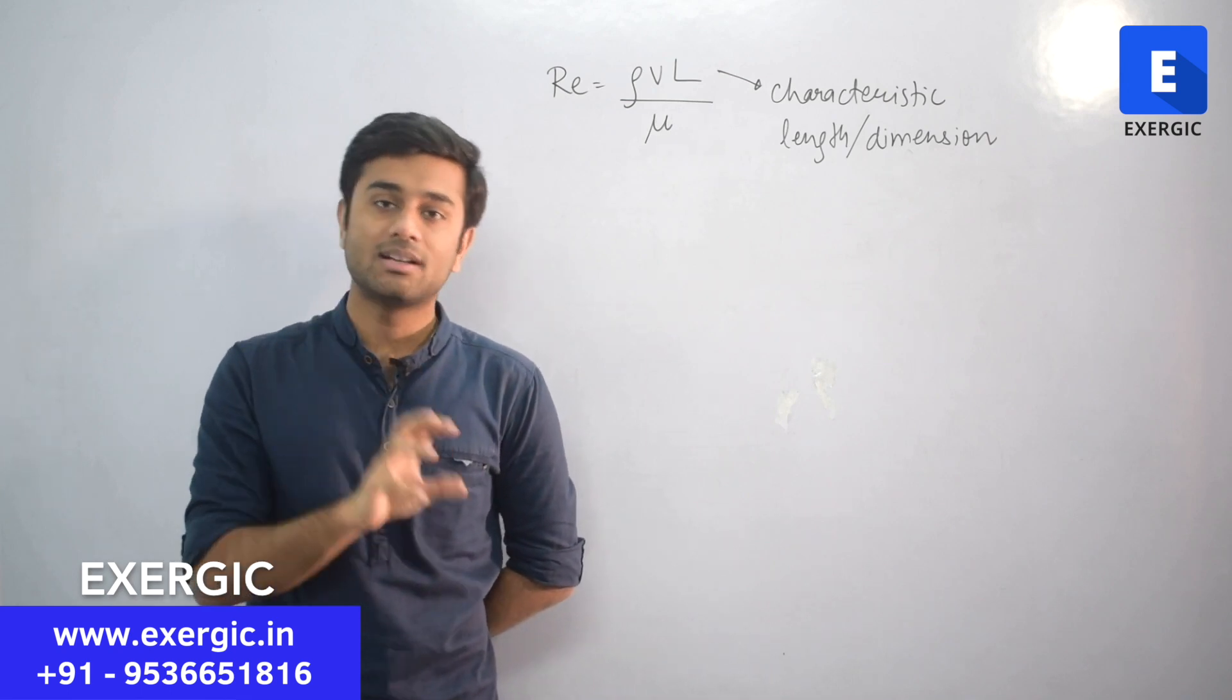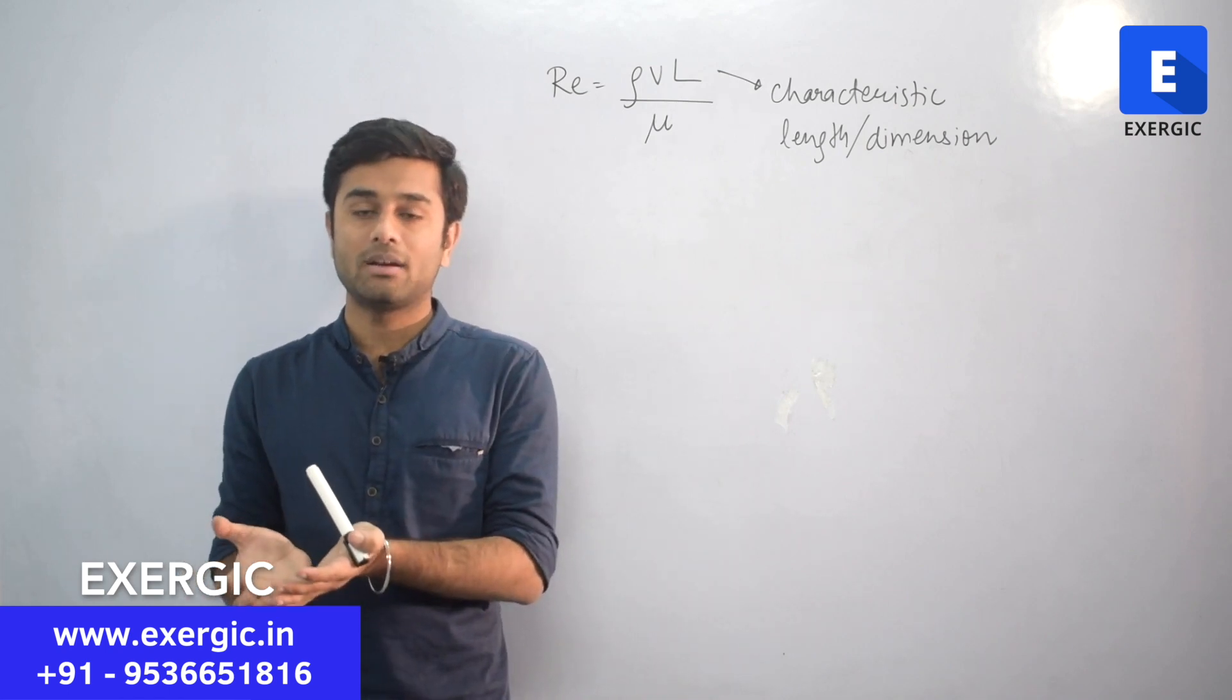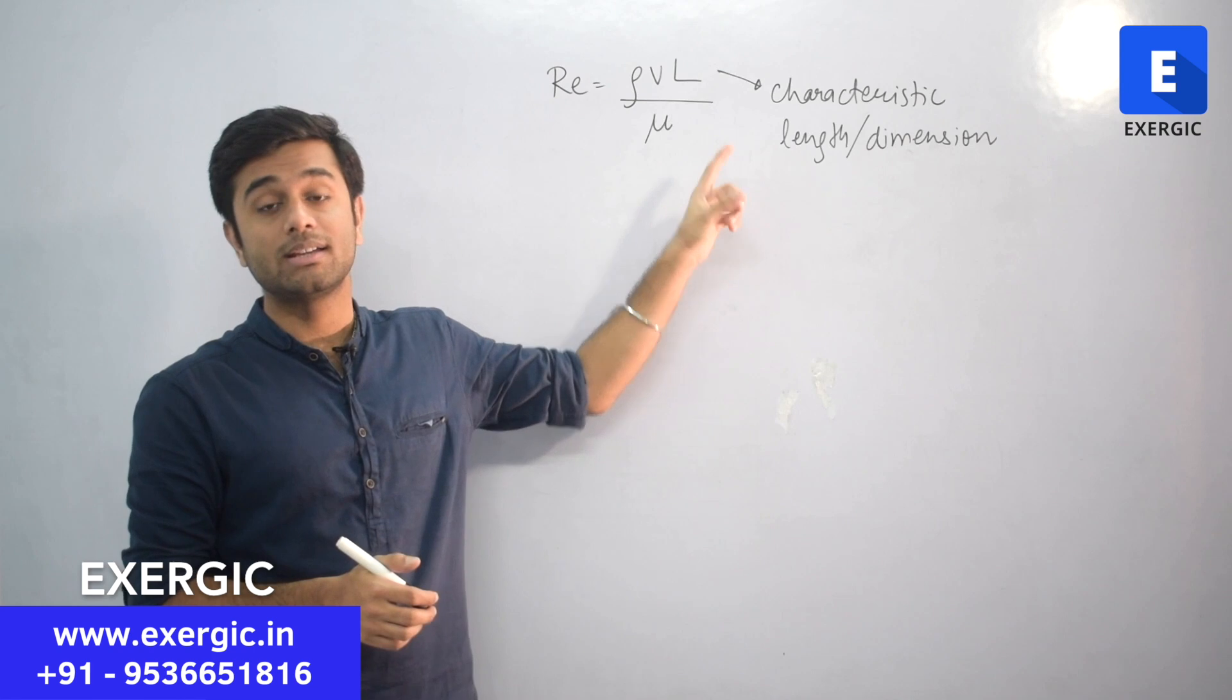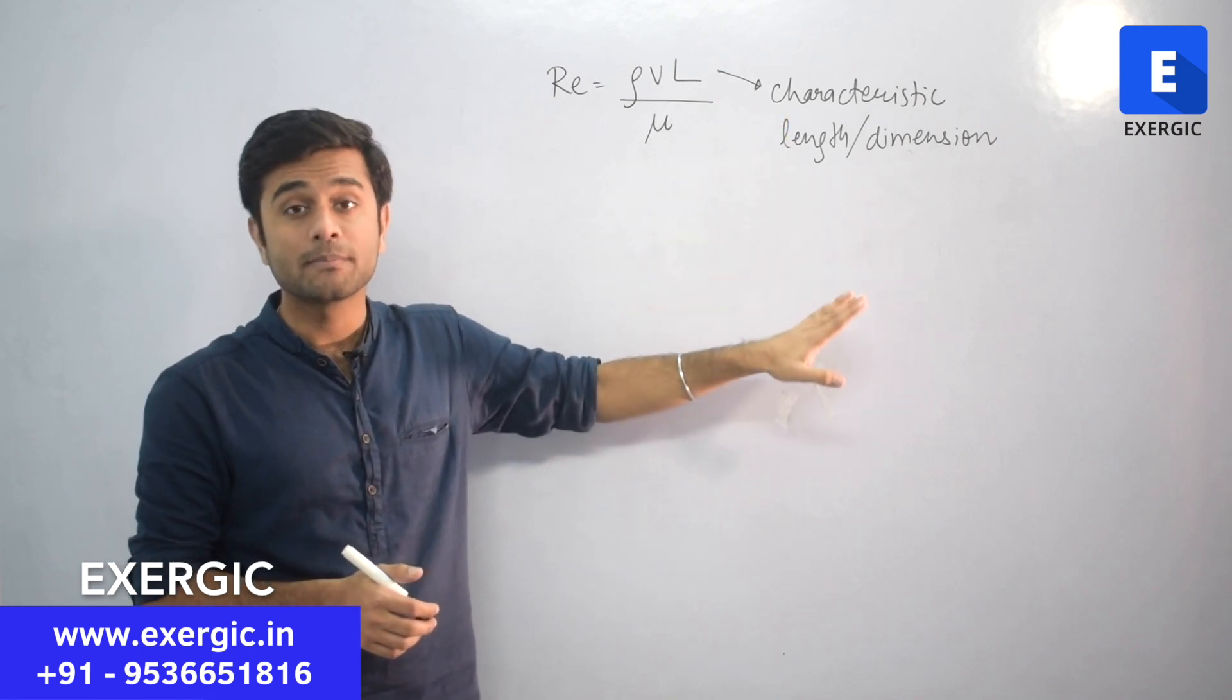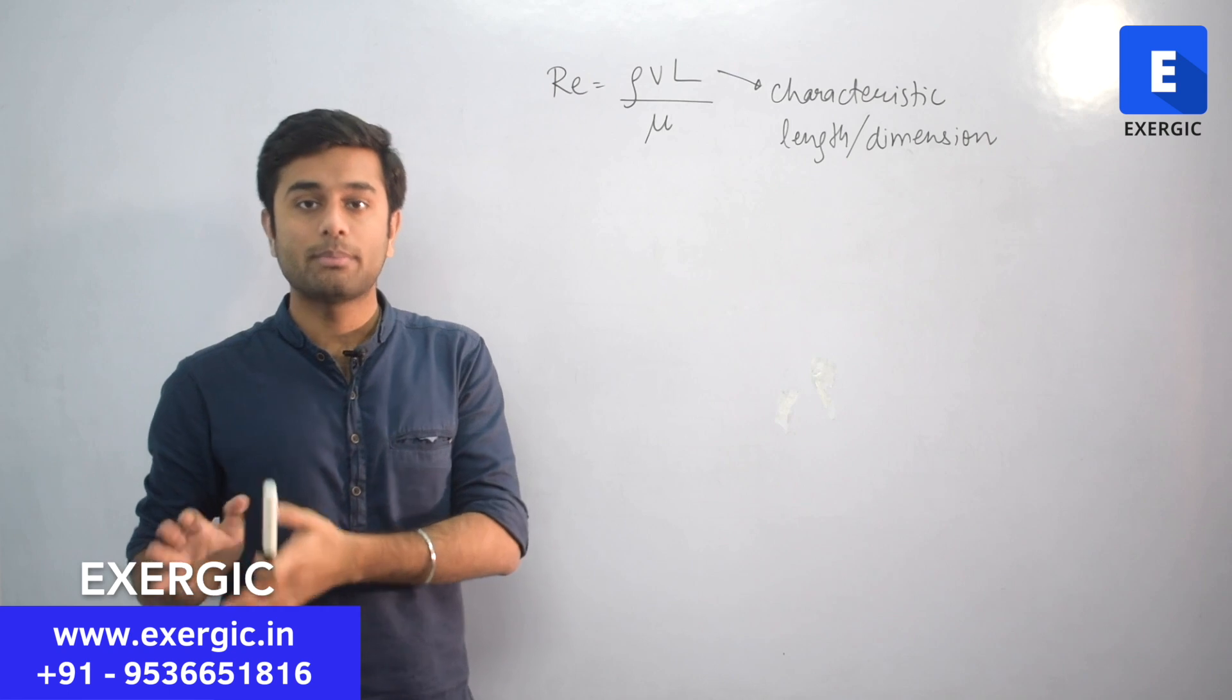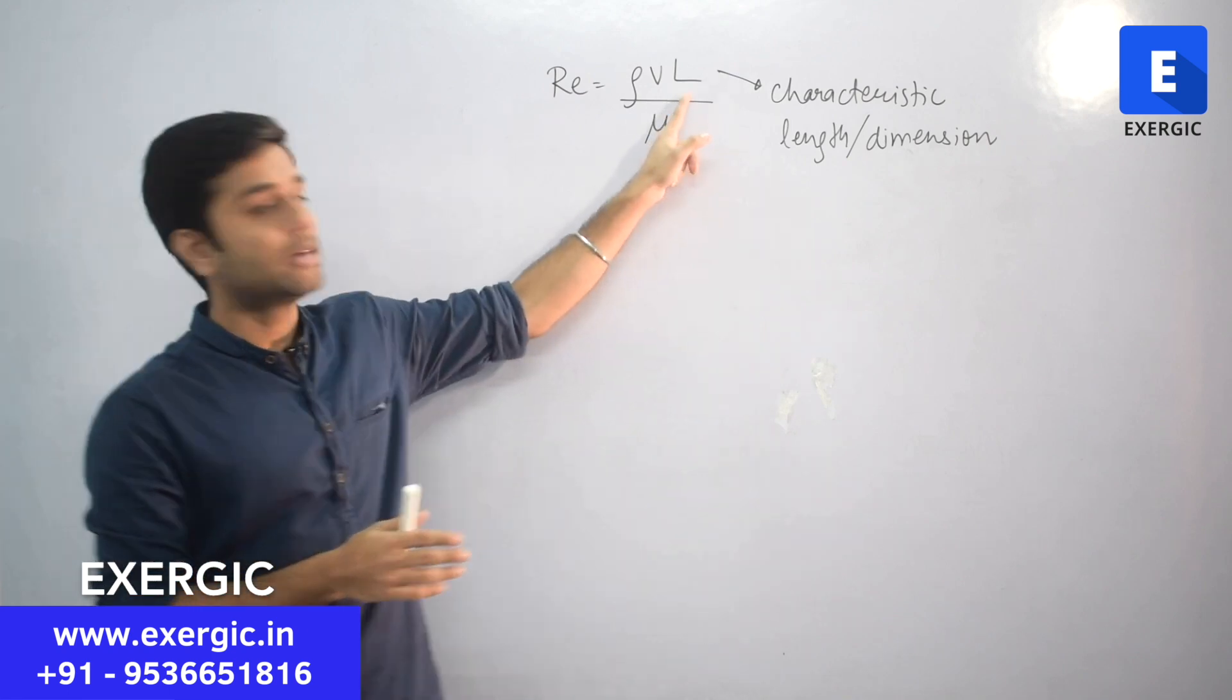The Reynolds number, the dimensionless number formed by all those important parameters like density, velocity, viscosity and characteristic dimension was this: ρVL/μ. I have written L here, which is characteristic dimension. But that was equal to D for the pipe because the Reynolds experiment was conducted for the pipe. But it does not necessarily have to be the diameter of the pipe only.